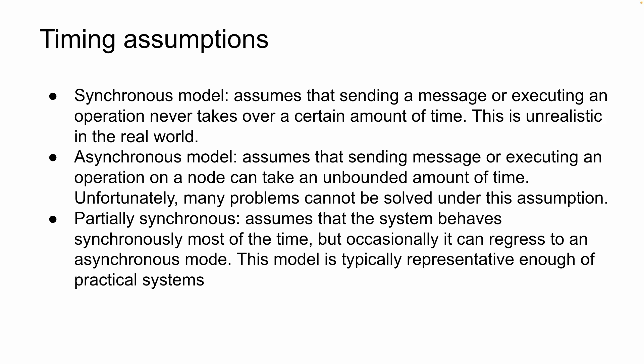The last model is partially synchronous, which means the system behaves synchronously most of the time, but for some requests it will take an unbounded amount of time. This is how most code is written — some functions are asynchronous and take an unknown amount of time, while others are expected to return results quickly. We'll dive deeper into coordination between services and nodes in the next videos.